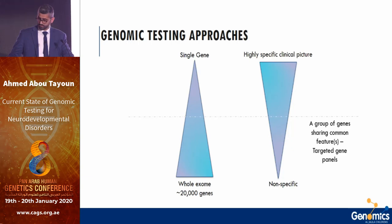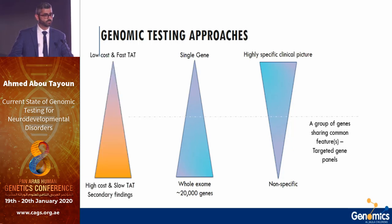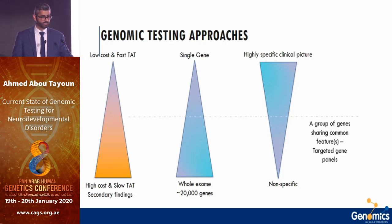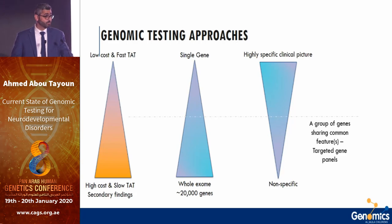The tradeoff is cost and turnaround time. More focused testing means faster results and lower cost; more comprehensive testing means slower turnaround and higher cost. With exome sequencing you're opening the whole book — you'll find things unrelated to patient indication, so-called secondary findings, making things more complicated.